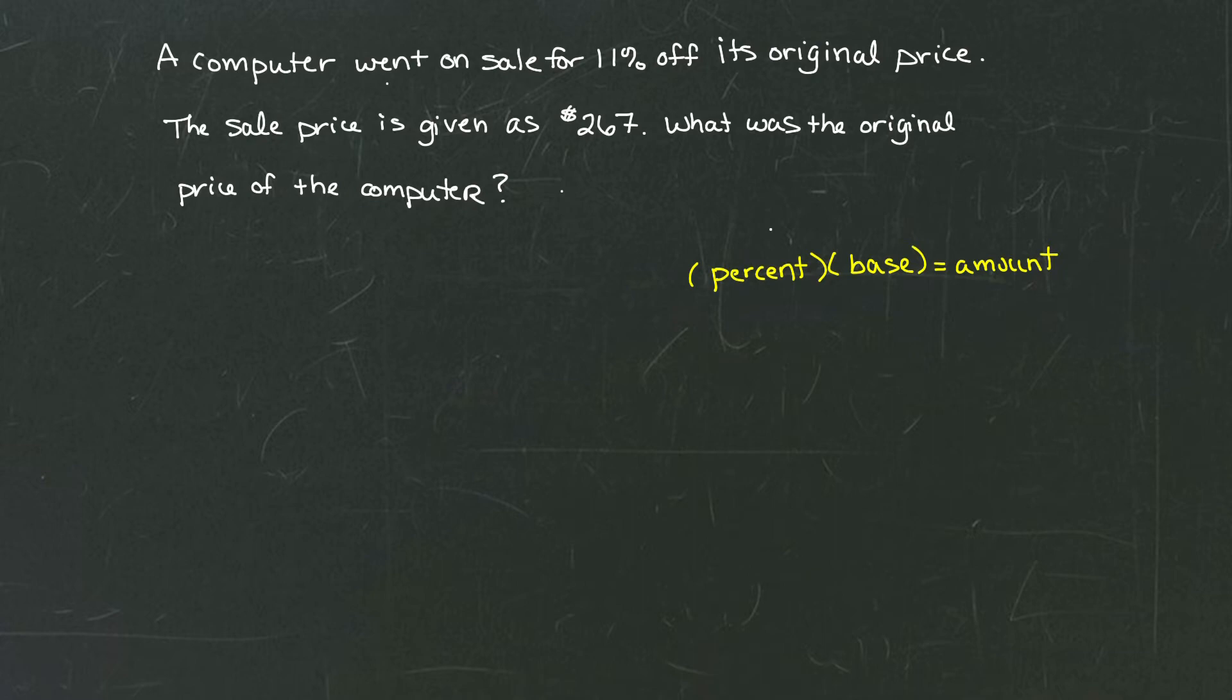In our problem, we're told that we have a sale price of $267, and we're trying to find the original price. Notice our original price is the base. That's where we're starting. So the original price is what's going to take the place of our base in this percent equation. This is where we're going to have our original price for our computer.